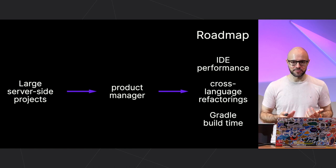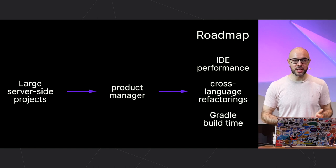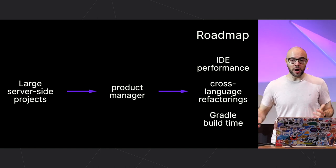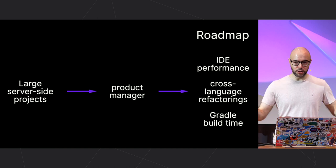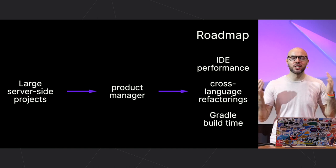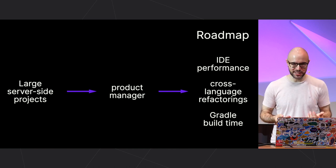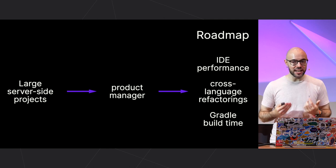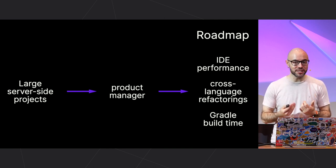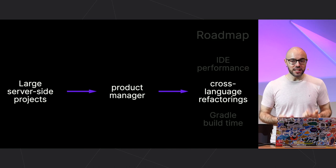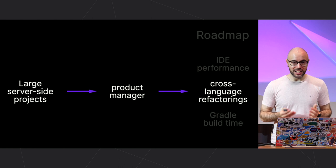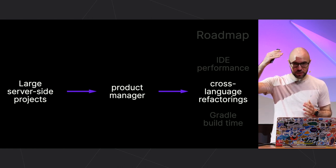Recently we conducted a series of interviews with developers working on large Kotlin JVM projects. Many of them still have a relatively huge Java codebase. We learned a lot of interesting things from these 30 interviews — particularly about how development productivity is affected by the quality of some IDE refactoring features in a multi-language environment, for example inline and change signature refactorings. This knowledge led us to increase the priority of improving these refactorings and moving them up on the roadmap.